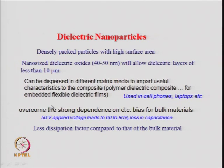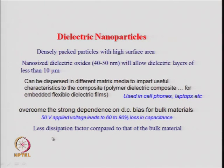Another advantage of nanoparticles is that in dielectric measurements there is a strong dependence on DC bias for bulk materials — you have to apply a high DC voltage. But if you reduce the particle size, say 50 volts applied voltage leads to 60–80% loss in capacitance for bulk, whereas nanoparticles reduce this DC bias dependence. Also, a dielectric nanoparticle has a much lower loss or dissipation factor compared to micron-sized dielectric materials.